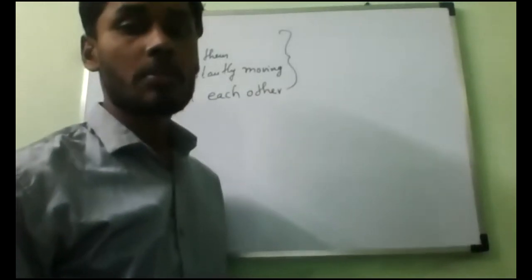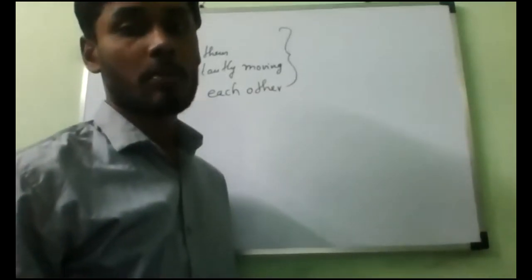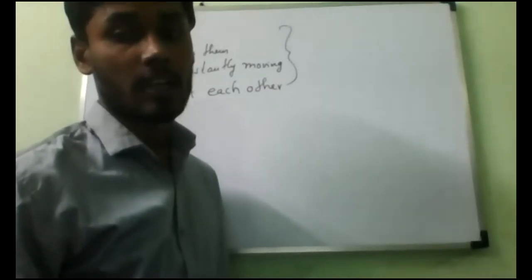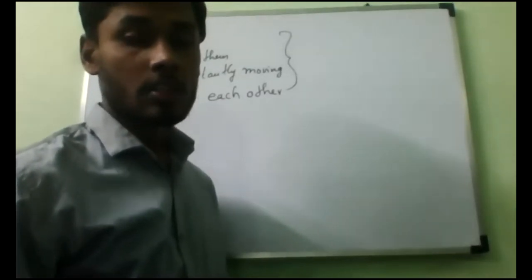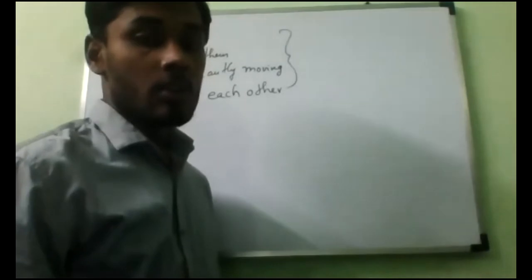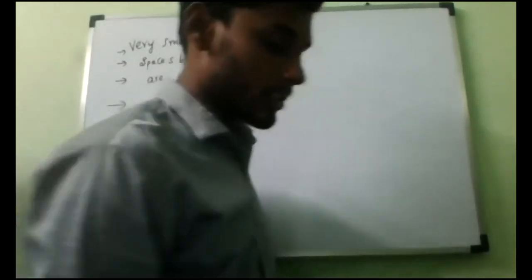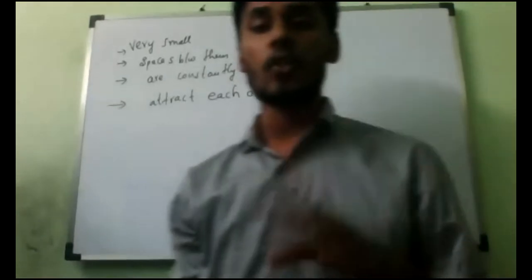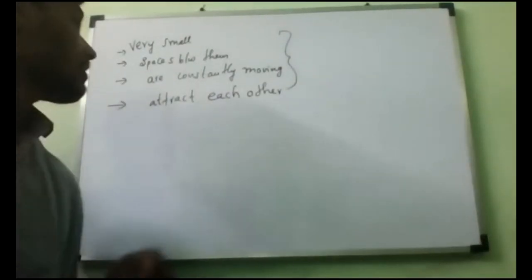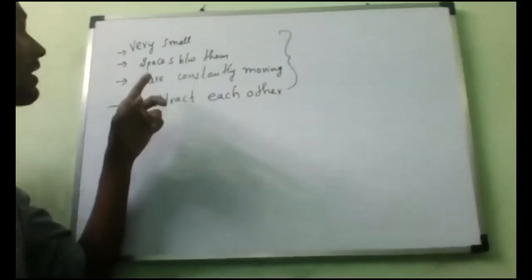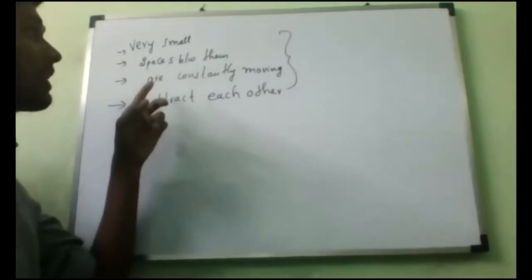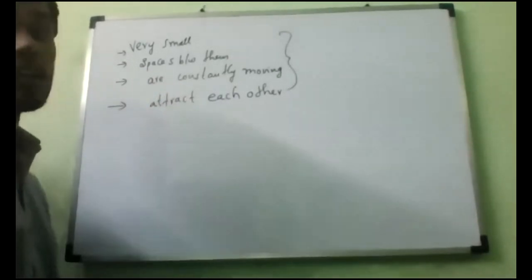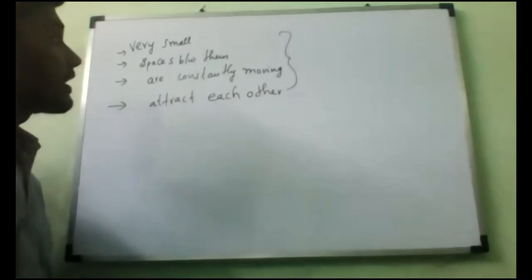Now we will perform some simple experiments to show the characteristics of particles of matter. We have studied these four characteristics: first, very very small; second, spaces between them; third, constantly moving; and fourth, they attract each other.